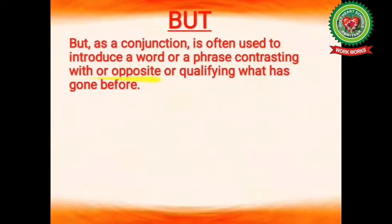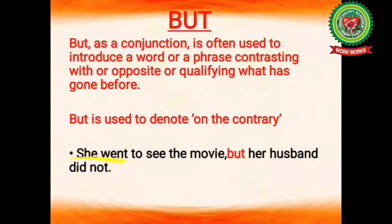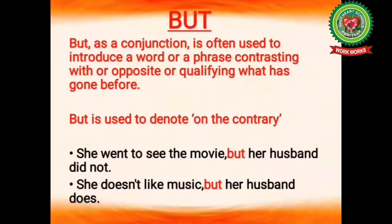The next conjunction is 'but'. But as a conjunction is often used to introduce a word or phrase contrasting with, opposite to, or qualifying what has gone before. This conjunction expresses opposite or contrast between two statements and is used to denote 'on the contrary'. Example: she went to see the movie but her husband did not — both statements are opposite, meaning she went alone. Another example: she does not like music but her husband does — she does not like music whereas her husband likes it.